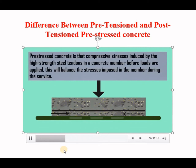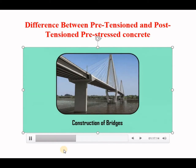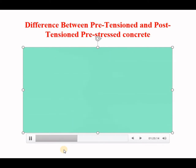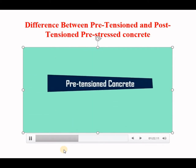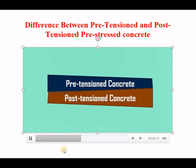The principle behind pre-stressed concrete is that compressive stresses induced by the high-strength steel tendons in a concrete member before loads are applied will balance the stresses imposed in the member during service. Pre-stressed concrete can be used for the construction of roofs, floors, walls, and bridges with longer unsupported spans. Pre-stressing is generally done by two methods: pretensioned concrete and post-tensioned concrete.